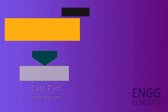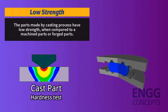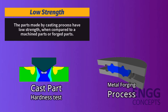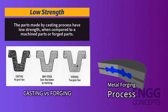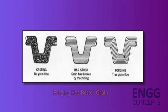Another disadvantage is low strength. Parts made by casting have lower strength compared to machined or forged parts, due to high porosity in cast parts. Forged parts are generally stronger and more reliable than castings due to their better grain structure, and forged parts handle impact better than castings.